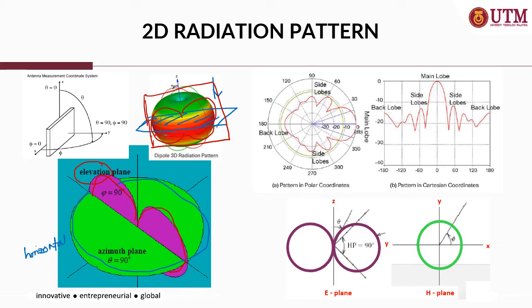The radiation pattern of the antenna may be represented in a 2D plane, either in a polar plot or in a Cartesian plot of coordinates. For example, from this donut shape, when we cut it vertically we may see a figure-eight shape in the antenna pattern, and when we cut it horizontally or at the H-plane or azimuth plane, we may see a round shape of the antenna pattern.